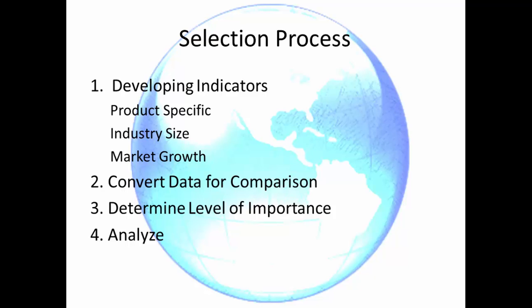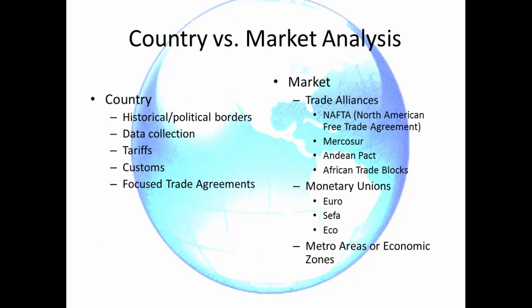Look for patterns in the data. And if your product is new, past indicators will likely not help. Country versus market analysis: there are items to consider when analyzing both the country and the market. Under country: historical, political borders, data collection, tariffs, customs, and trade agreements. Under the market: trade alliances, monetary unions, and metro areas or economic zones.